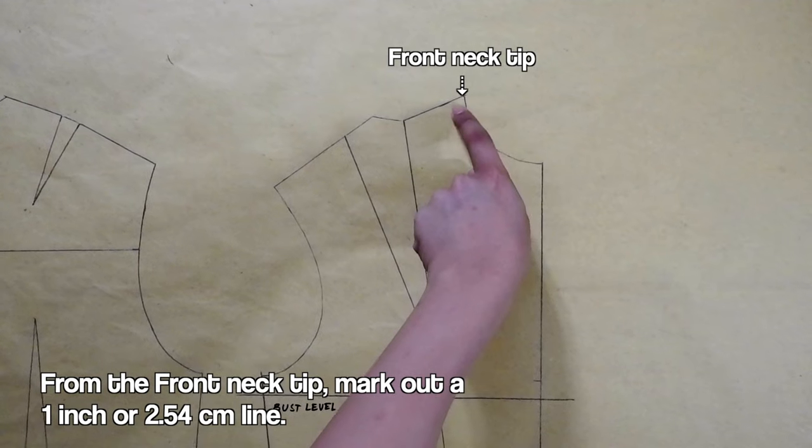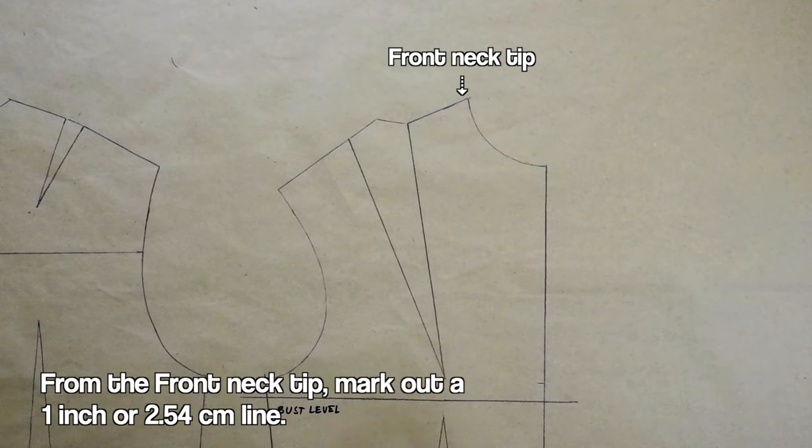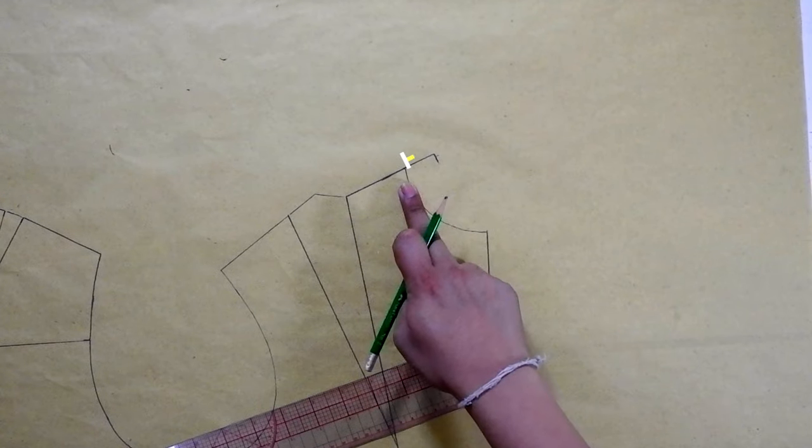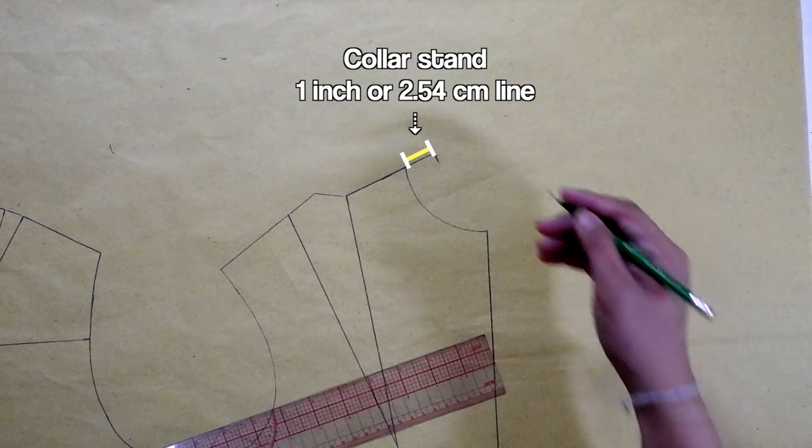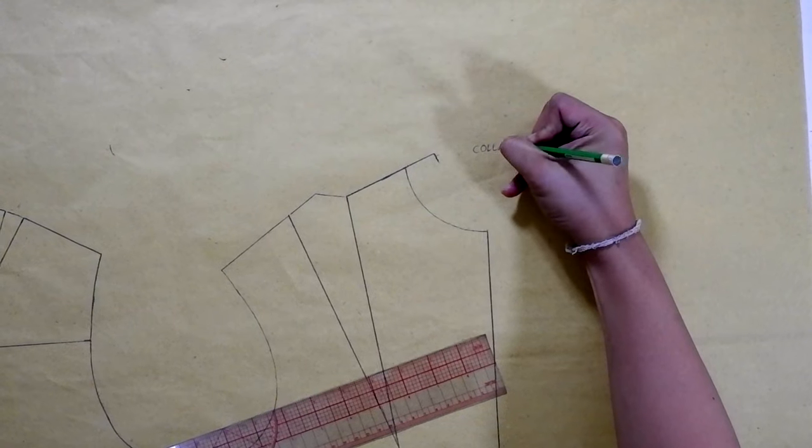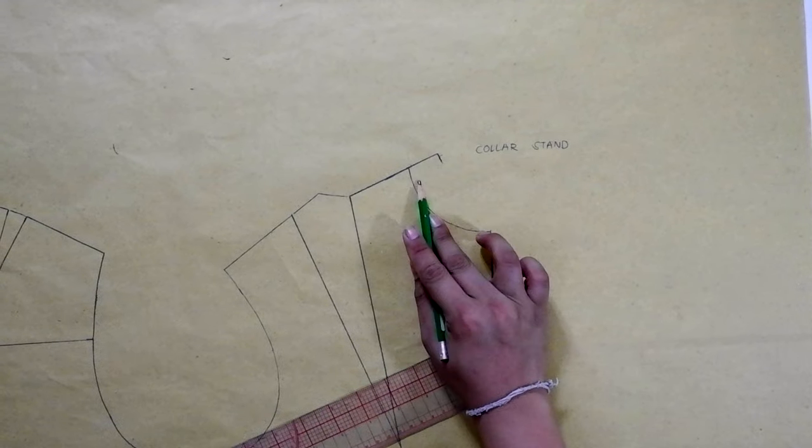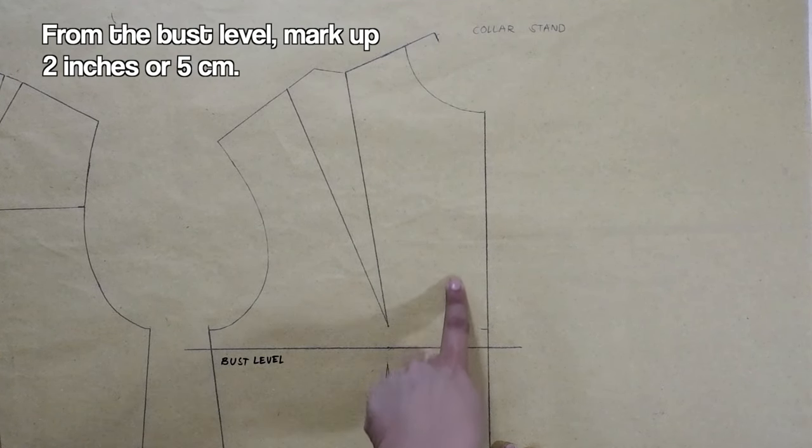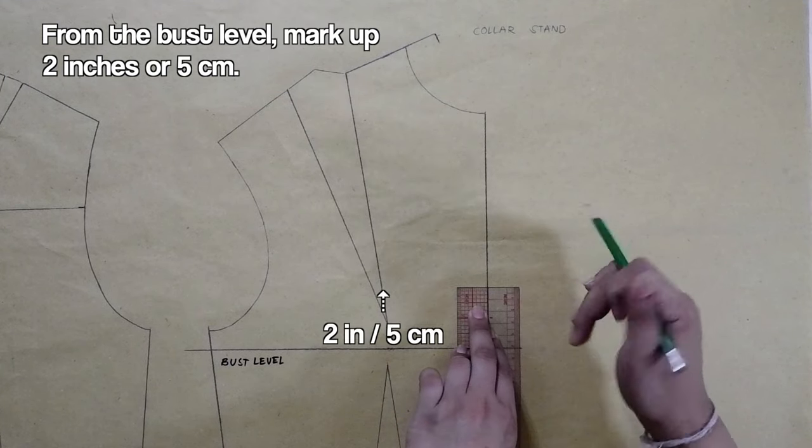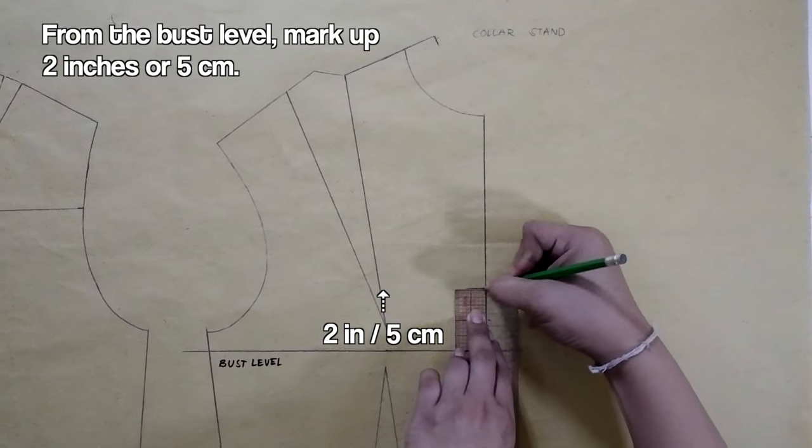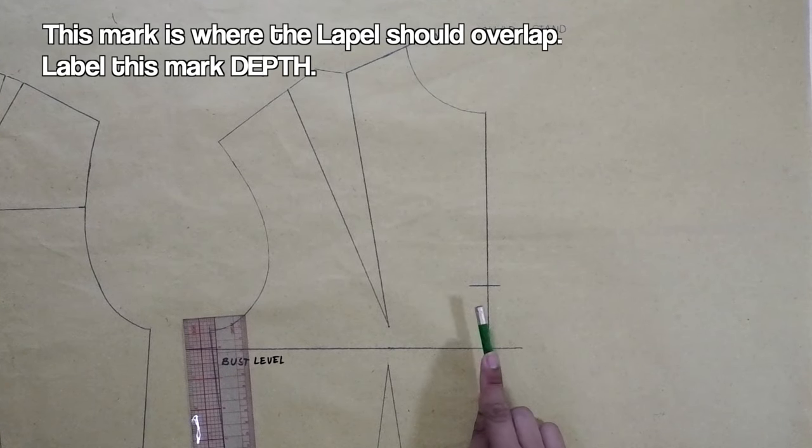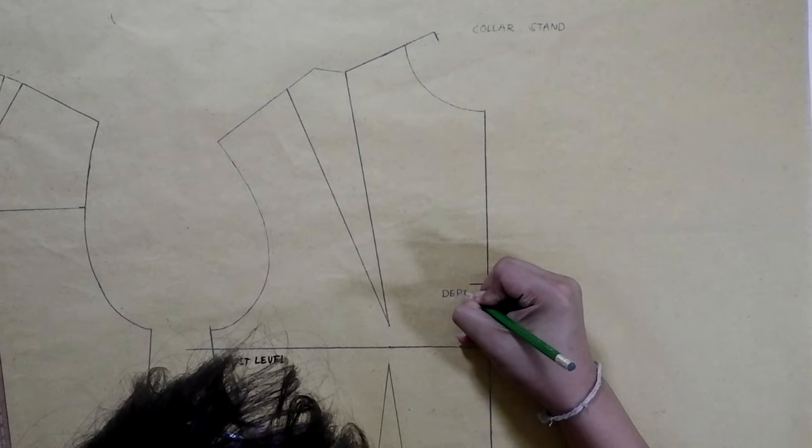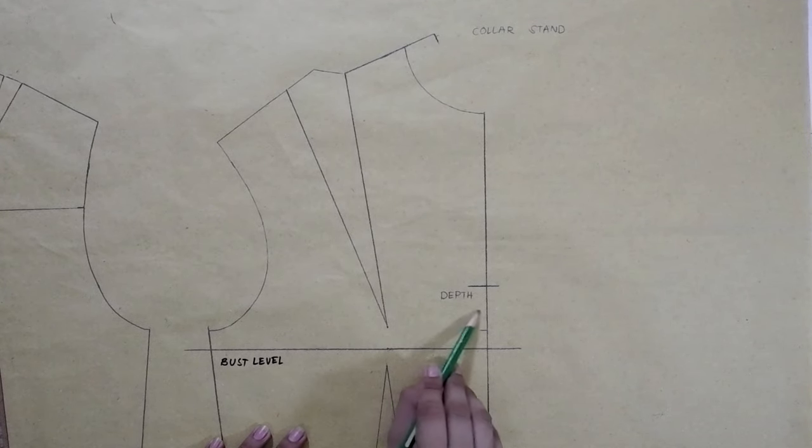From the front necktip, we will mark out or extend 1 inch or 2.54 centimeters. This 1 inch will be our collar stand. Next, from the bust level of our basic torso or basic bodice, mark up 2 inches or 5 centimeters. This mark is where the lapel should overlap. Label this depth.